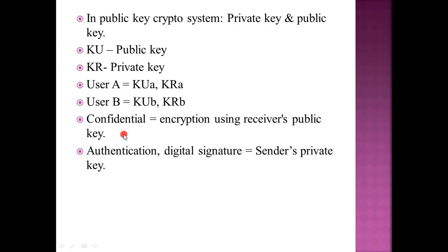When we encrypt using the receiver's public key, that creates a confidential message. If you have a confidential message, it will be encrypted with the receiver's public key. But if you have a digital signature, the sender will encrypt using their own private key. If the user is to be authenticated, it will encrypt with the private key.